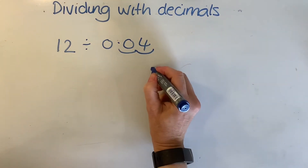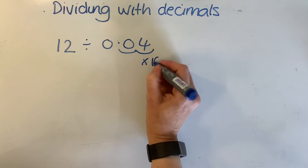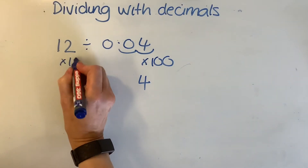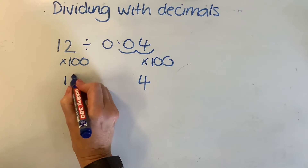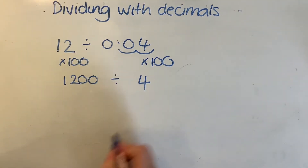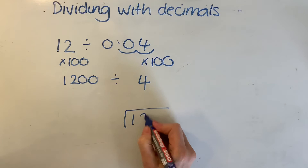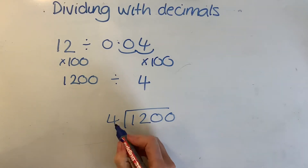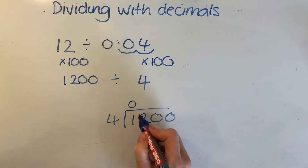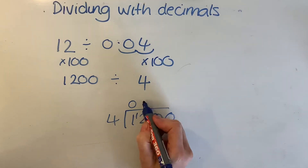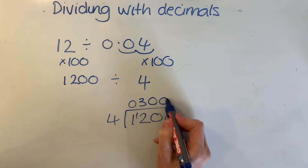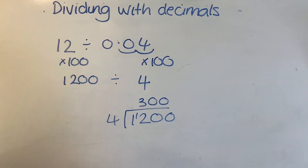I times it by 100 and I end up with 4. I've got to do the same to the other side though, otherwise I won't get the same answer. So times that side by 100 — I've now got 1200 divided by 4, a simple sum. How many 4s are in 1? None, carry the 1. How many 4s are in 12? 3 — three 4s are 12. How many 4s are in 0? 0. I don't need to put the 0 up there.